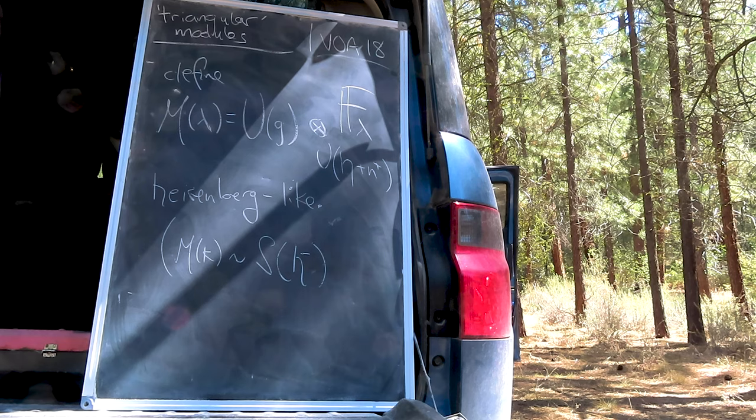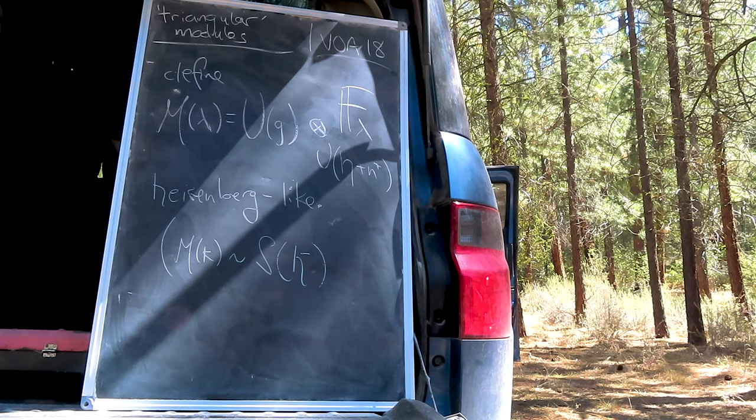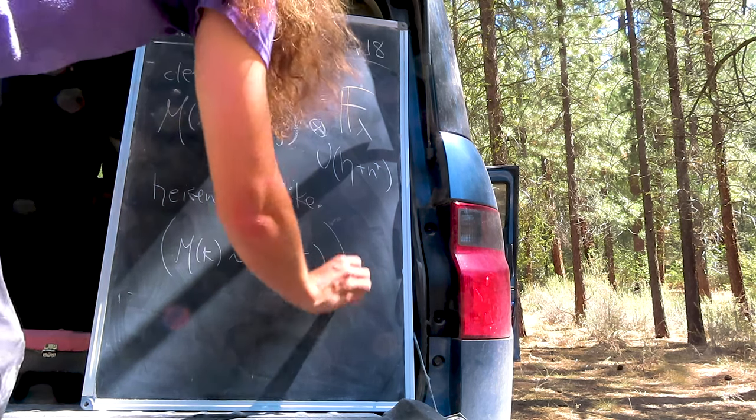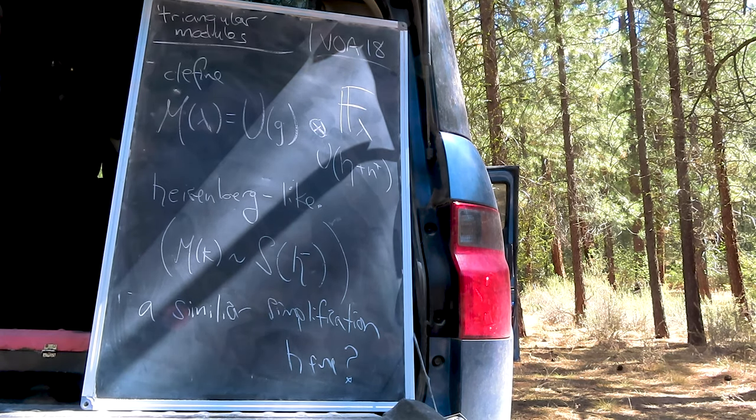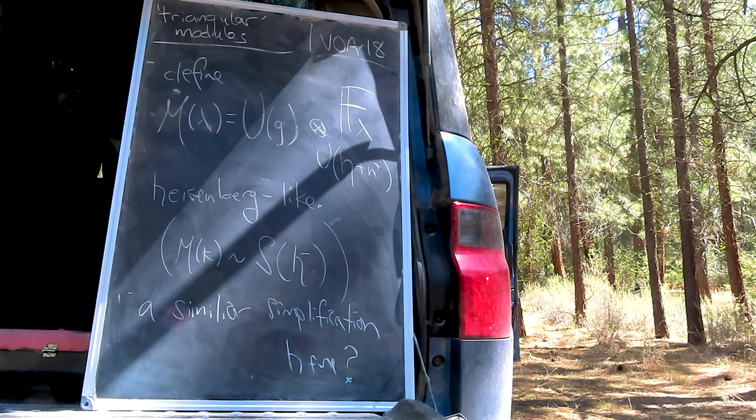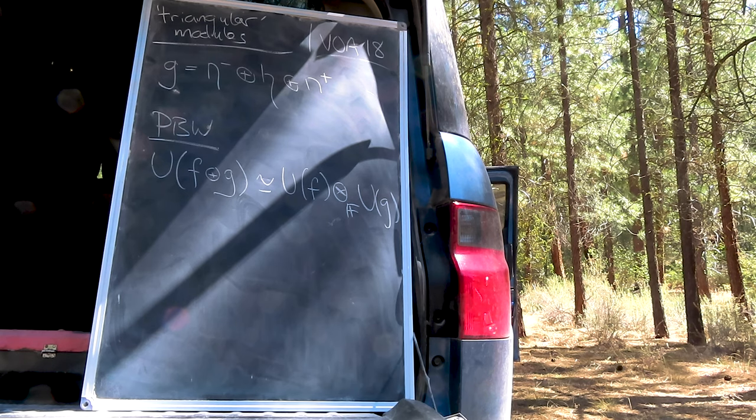You might remember that the Heisenberg module simplified to the symmetric algebra over the negatively graded sub-algebra. We're going to see a somewhat similar simplification for our analog, M of lambda. Recall that the Poincaré-Birkhoff-Witt theorem implies that the universal enveloping algebra of the direct sum of two sub-algebras is equivalent to the tensor product of the universal enveloping algebra of those terms.